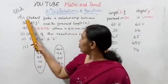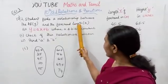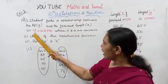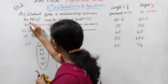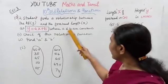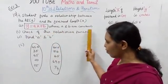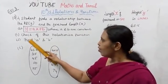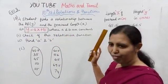A student finds a relationship between the height and the forehead length. The height Y and the forehead length X as Y equal to AX plus B, where A and B are constants. Check if this relation is a function — that is the first question.